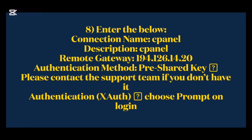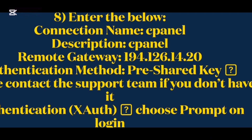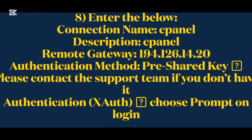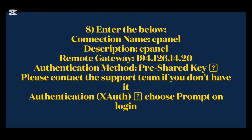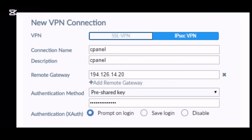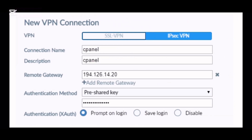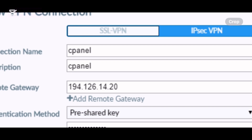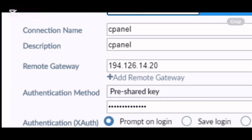Step 8: Enter the following details. Connection Name: cPanel. Description: cPanel. Remote Gateway: 194.1.26.14.20. Authentication Method: pre-shared key. Please contact the support team if you don't have it.